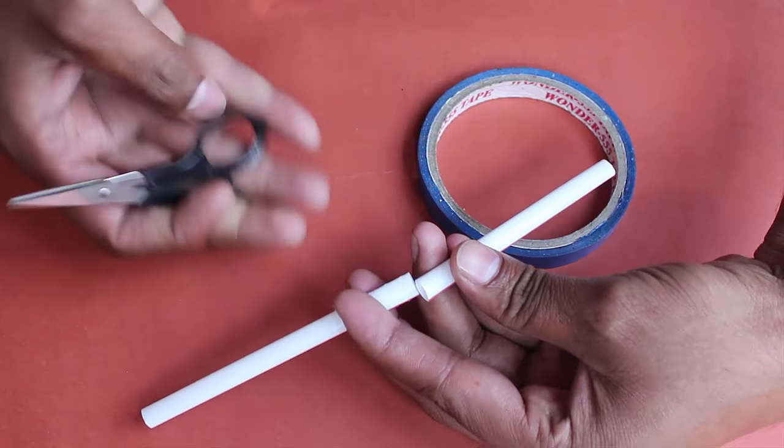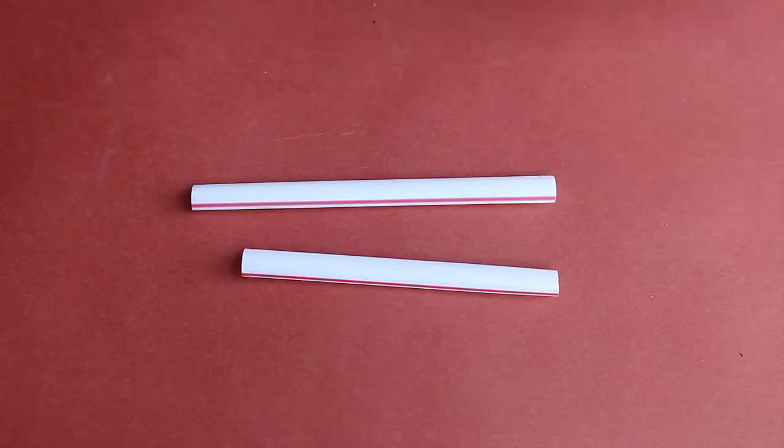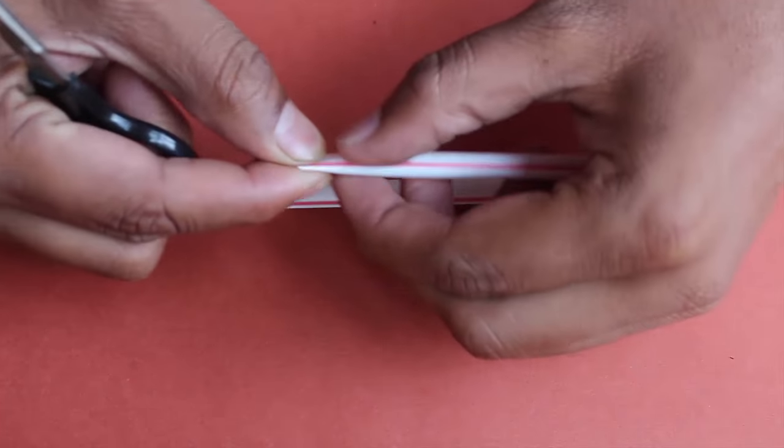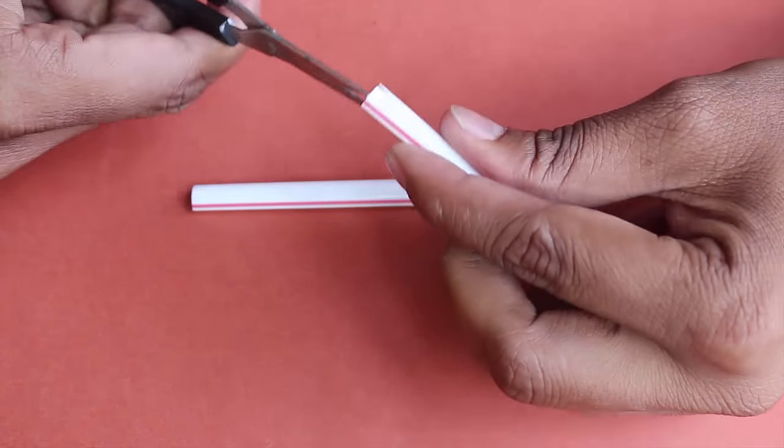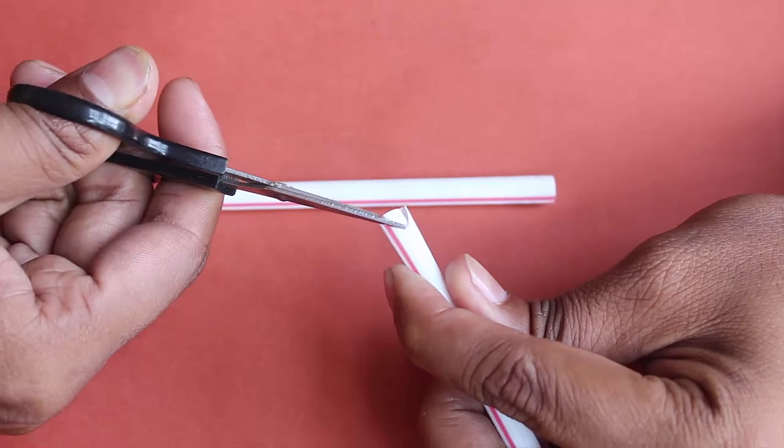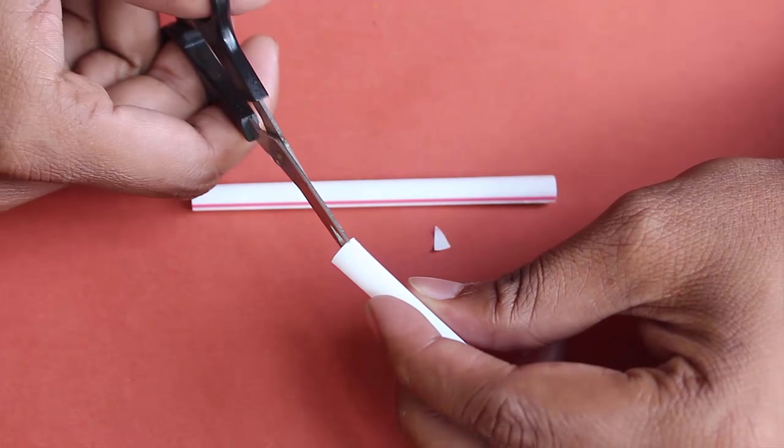Cut the fat straw first in half, take one piece and make a small recut in only one side of the straw.